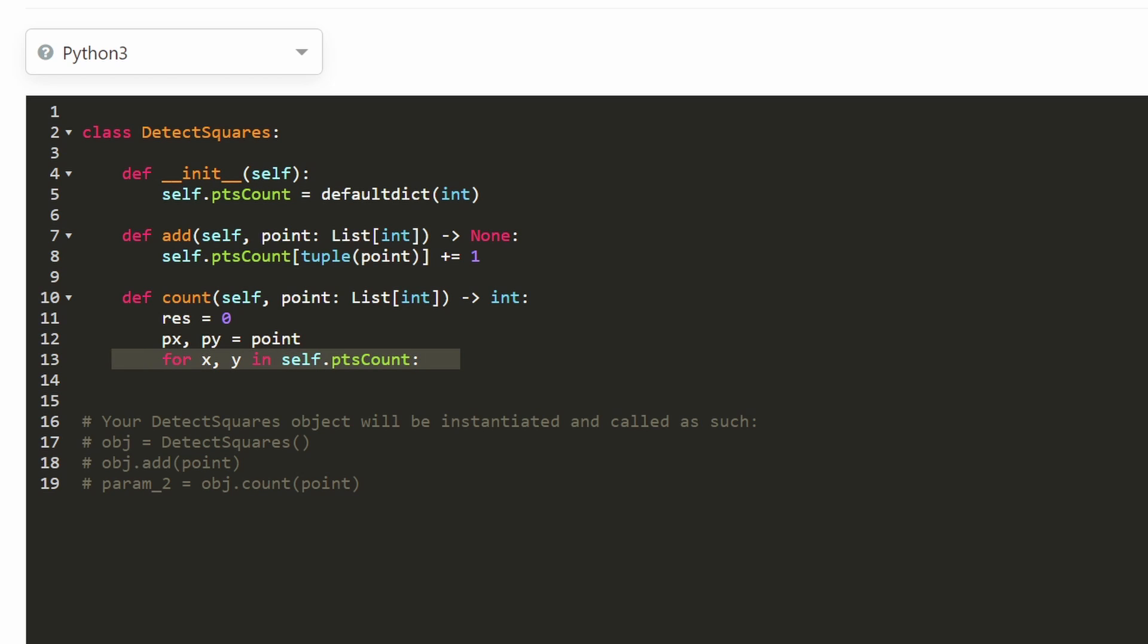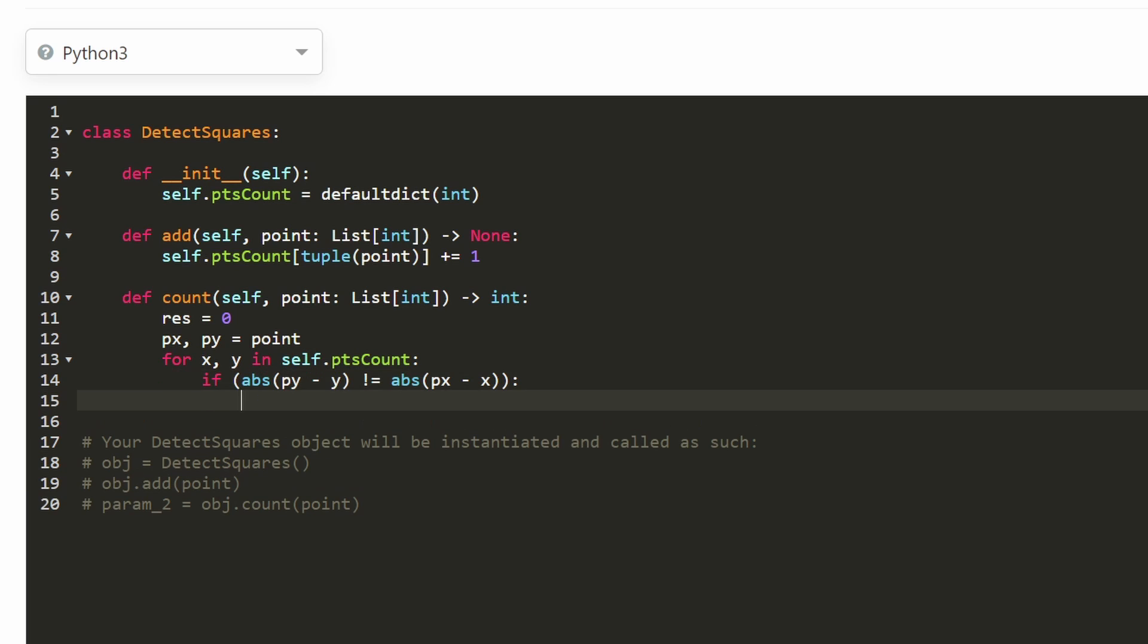But we need to actually verify that this is a diagonal point. So how can we do that? Well, we're going to say is the absolute value of the difference between the Y coordinates equal to the absolute value of the difference between the X coordinates. If that's true, then we can continue. If it's not true, meaning these are not equal, then it's not really possible for these to form a square at all if they're diagonal to each other. So in that case, we're just going to continue to the next iteration of the loop.